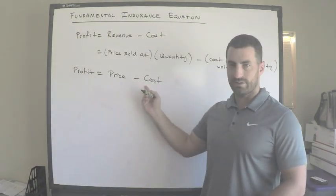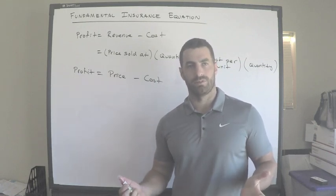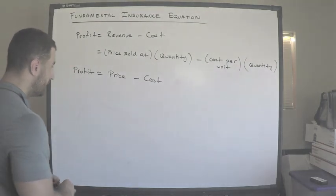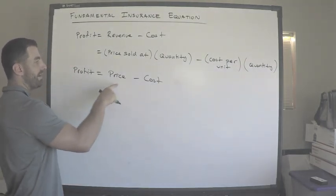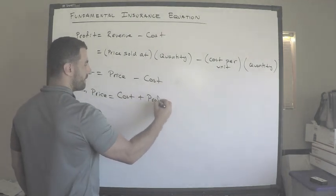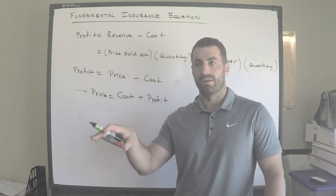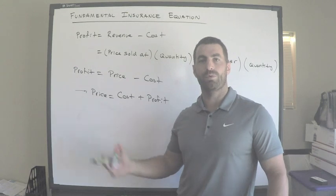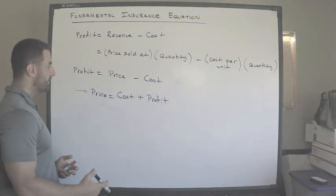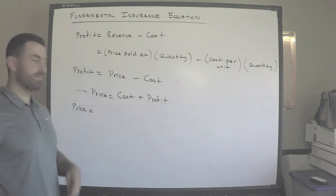What makes insurance so difficult to price is that you don't know the cost. That's where we do the actuarial work — we have to statistically estimate what costs are going to be. Rearranging the equation: price equals cost plus profit. As an insurance company, you set what the profit is, estimate your costs, and that determines your price. In insurance, we call the price the premium.